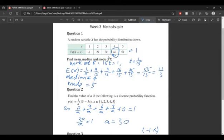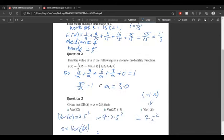The mode is the value with the highest probability. In this case, five has the highest probability, so five is our mode. Cool, so question two.